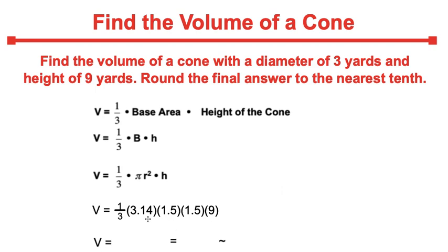When you multiply 3.14 times 1.5 times 1.5 times 9, you will get 63.585. And we'll divide that by 3. Once you get that, you get 21.195.